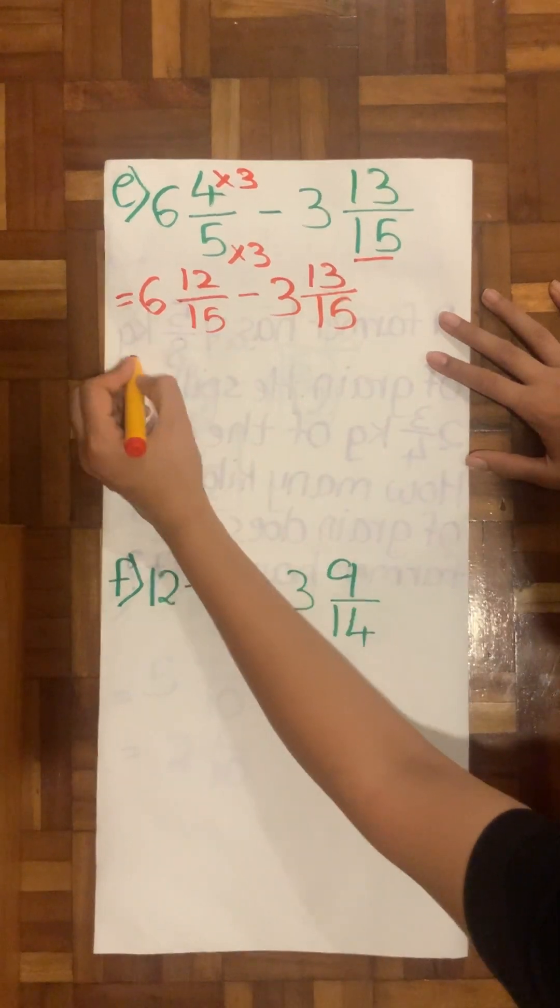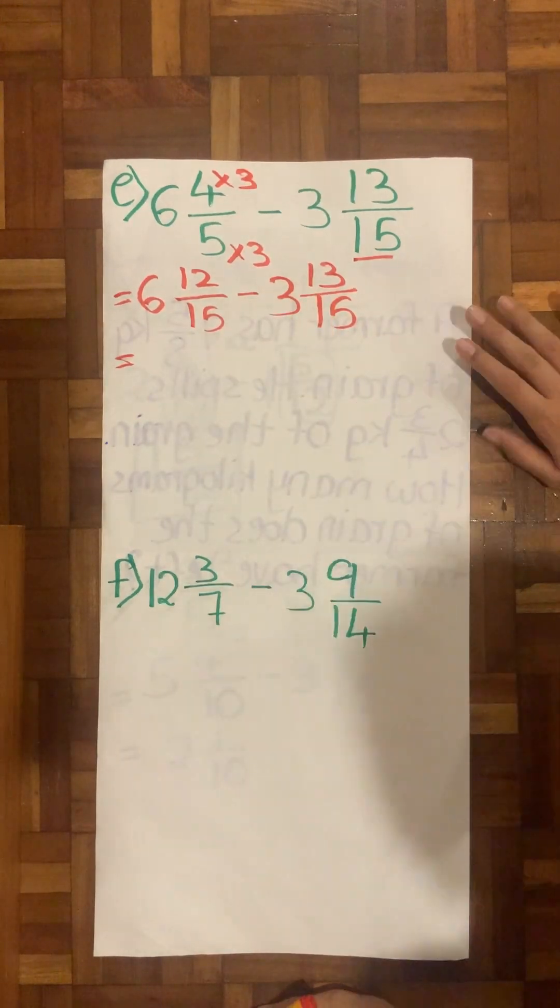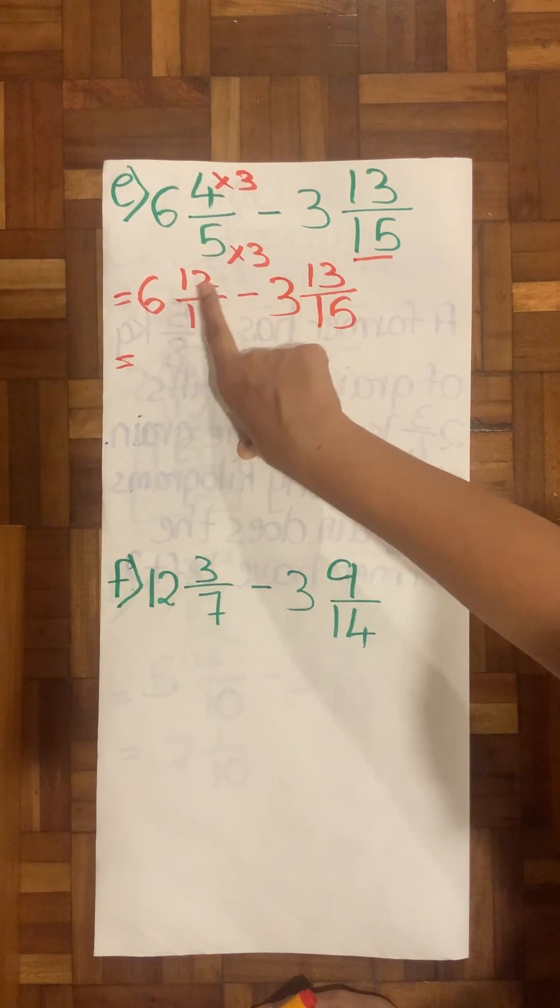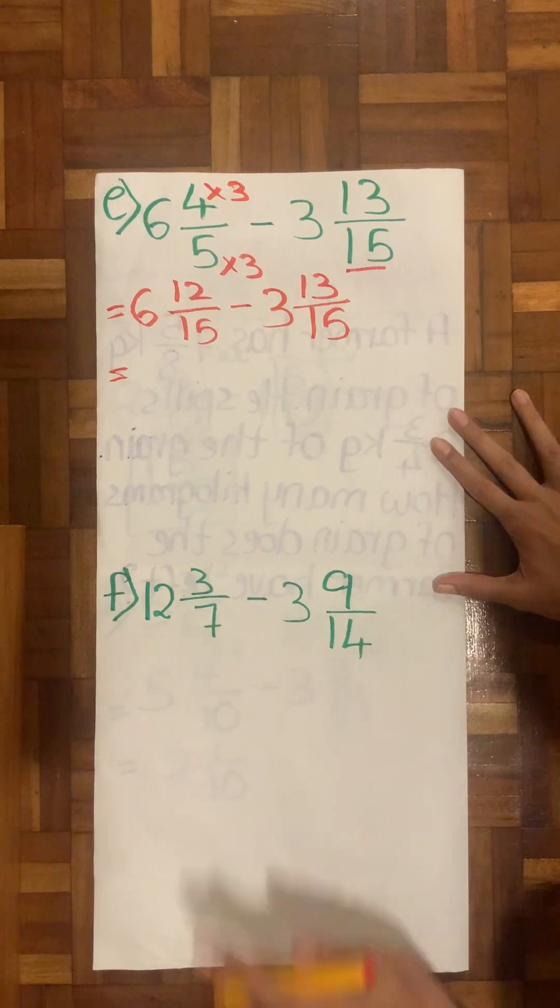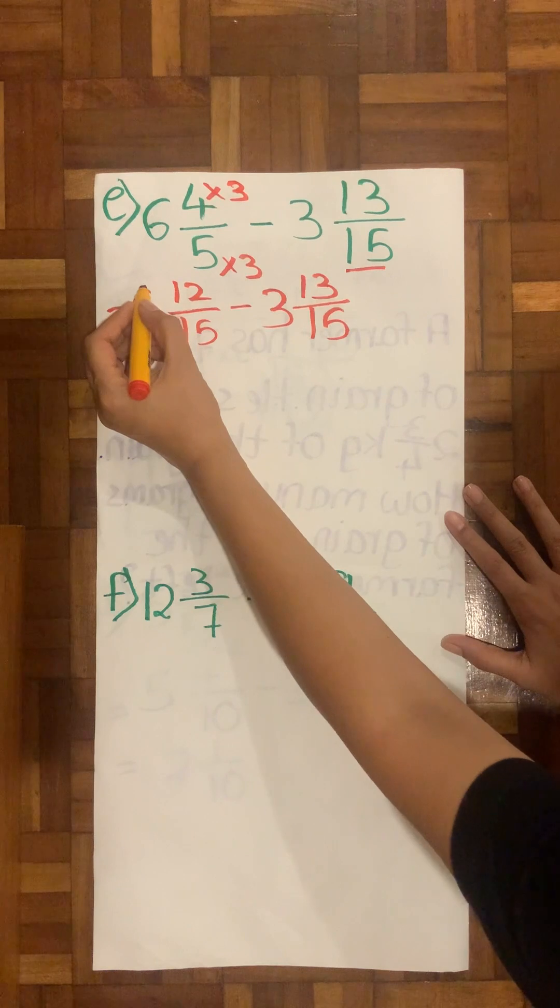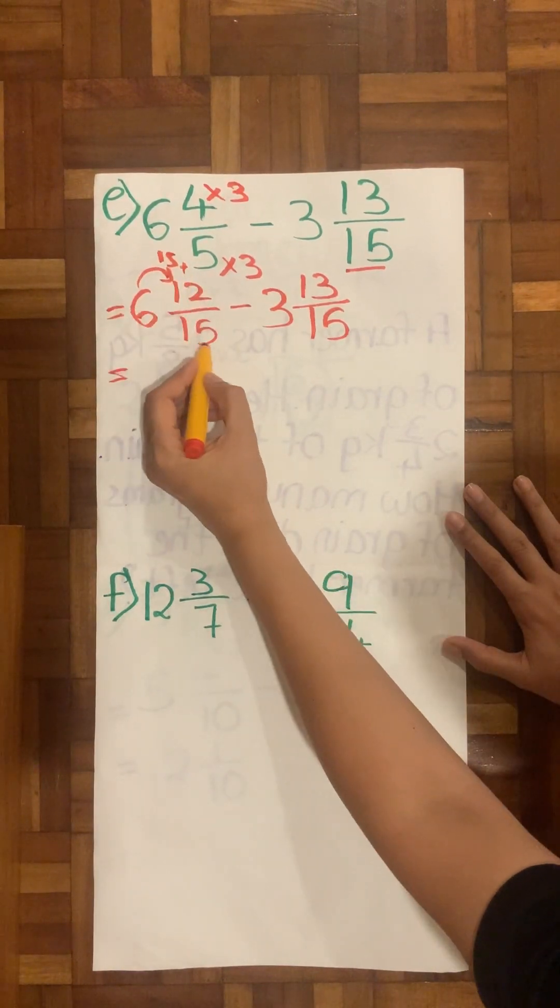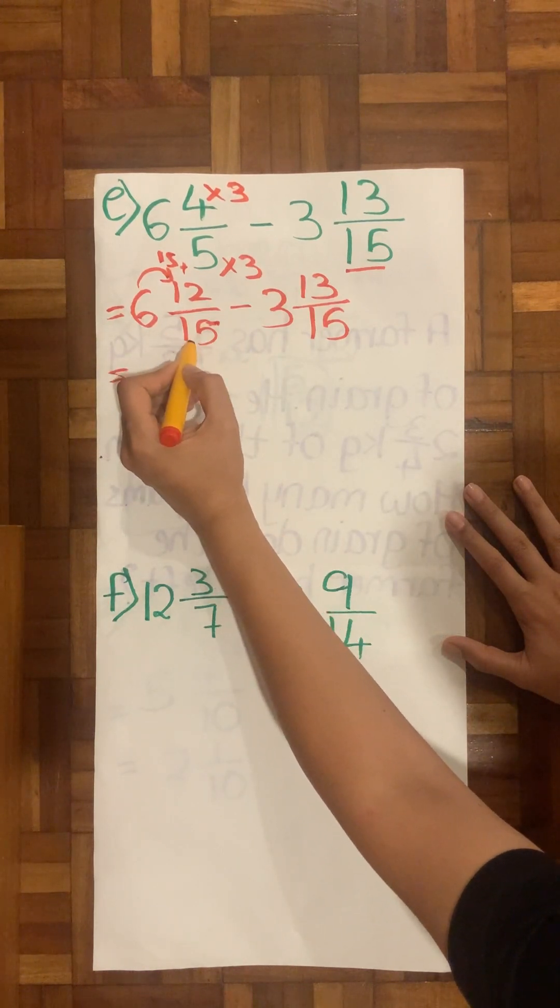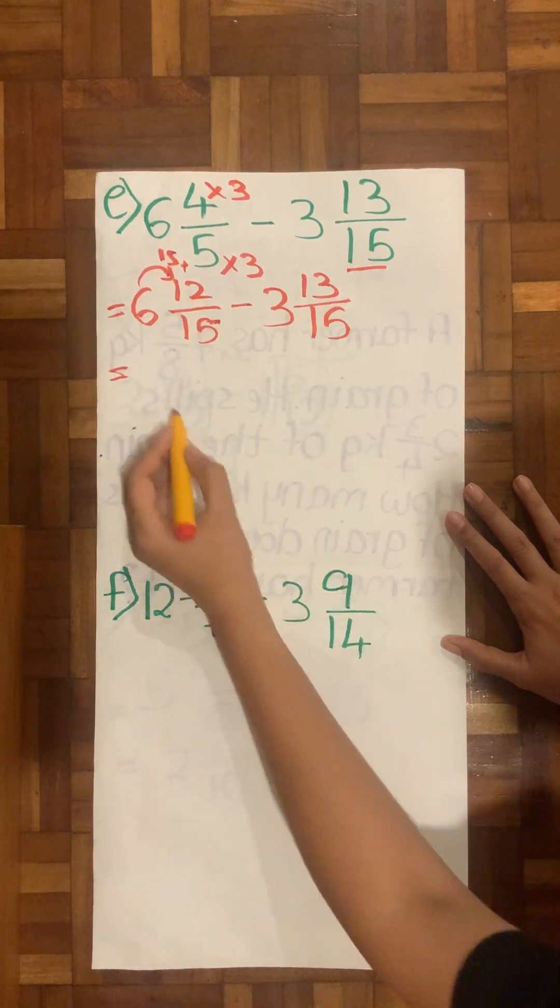Let's open the equation. So 6, 4 times 3 is 12, 12 over 15 minus 3 wholes 13 over 15. I let it be the way it is. Now I will further check if my fraction can it subtract. No. Since my fraction, the number is smaller here. Therefore I will make it rich. How will I make it rich is I will take my this 6.